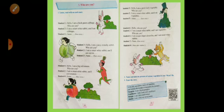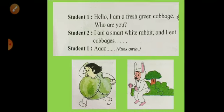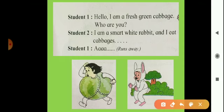Now we will see what happens in this lesson. Student 1 says, 'Hello, I am a fresh green cabbage. Who are you?' Student 2 replied, 'I am a smart white rabbit, and I eat cabbages.' Student 1 feared and ran away. So the cabbage feared and ran away from that place because the rabbit eats cabbages.